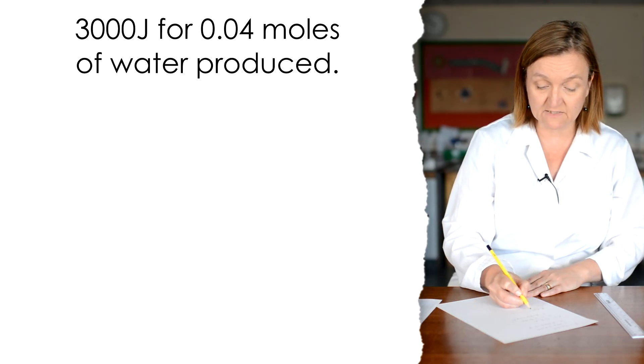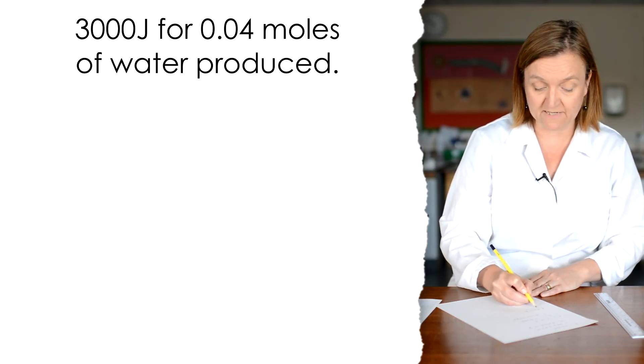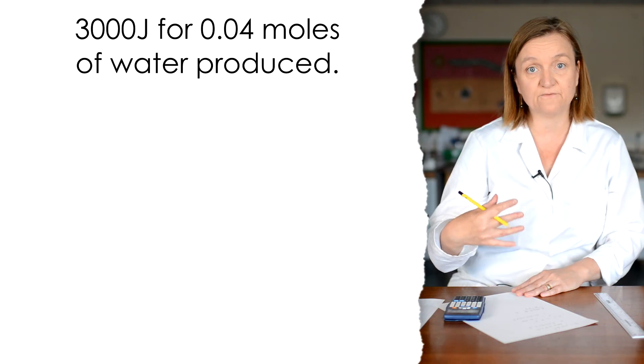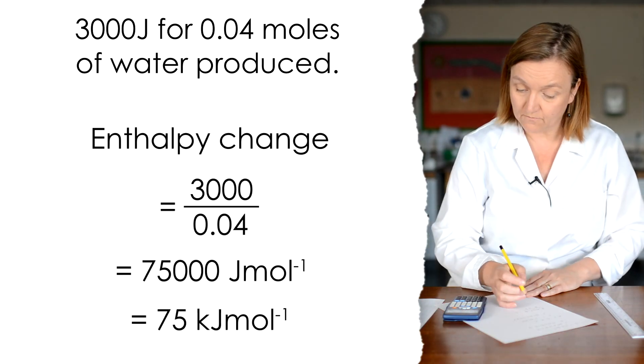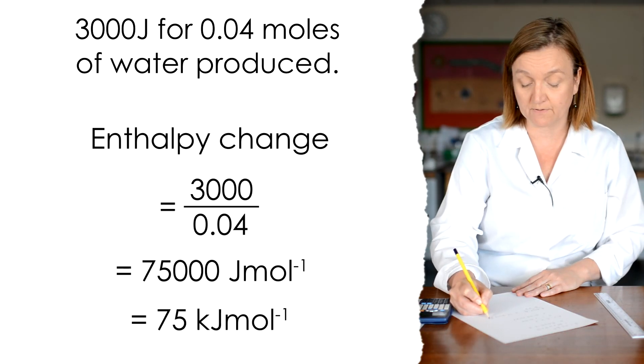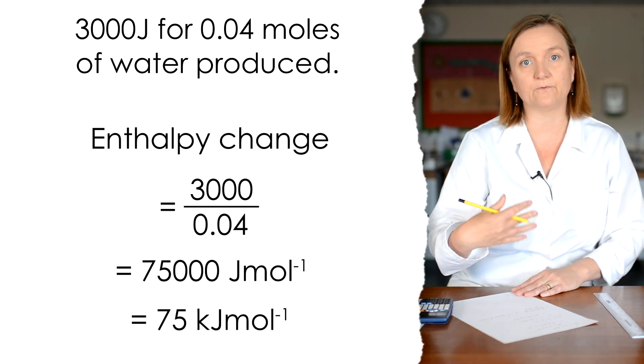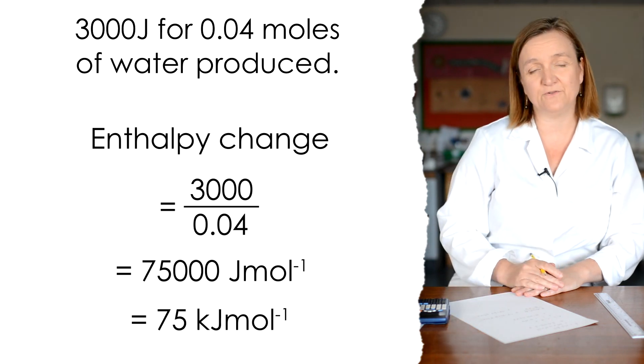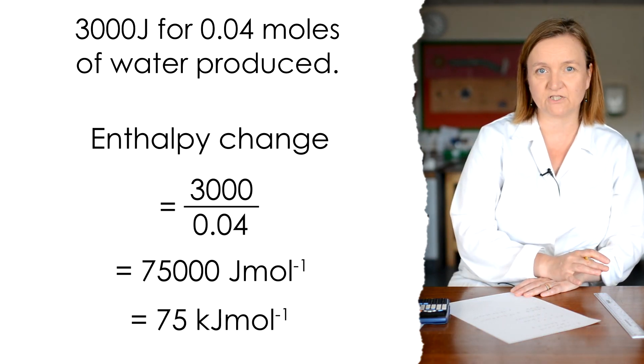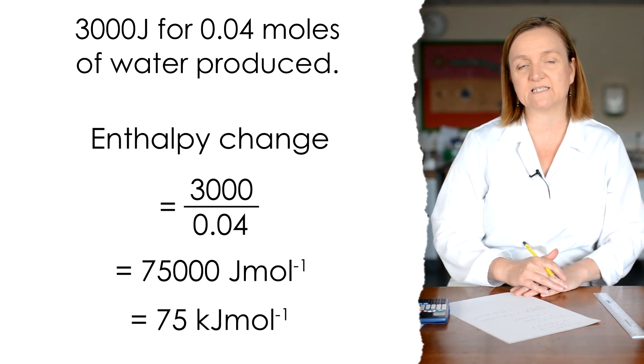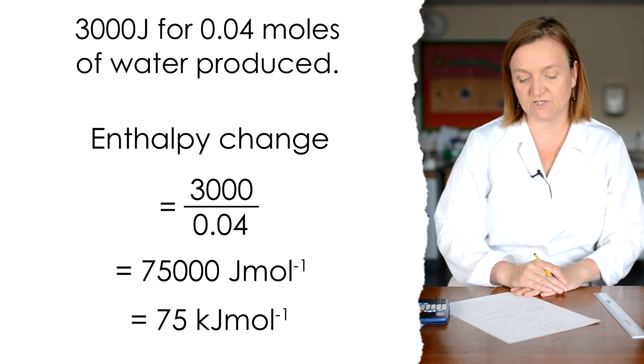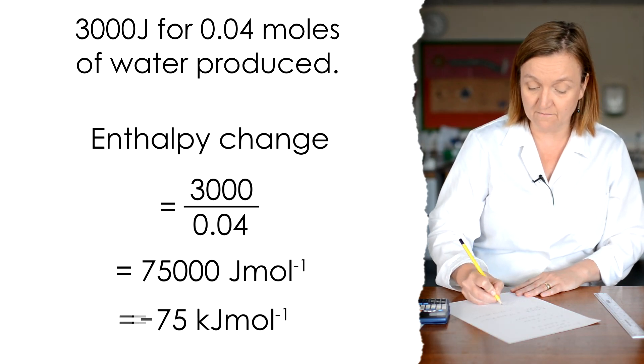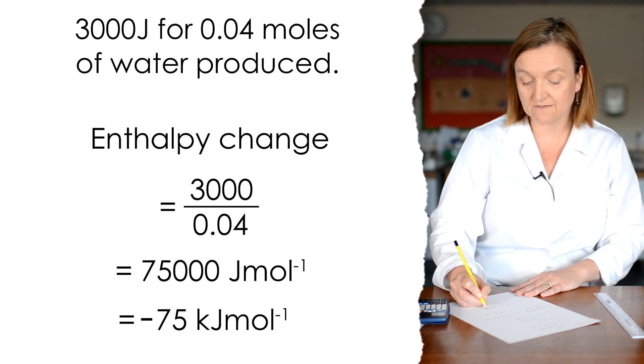So if I take my energy released and divide it by my number of moles, 0.04, that will give me the energy released for one mole of water, which is 75,000 joules per mole. But of course, we always convert to kilojoules. So that's 75 kilojoules per mole. And the final thing we have to remember is that this was an exothermic change. Temperature went up. And so when we express the enthalpy change of neutralisation, it must be expressed as a negative. So that gives me a final answer of minus 75 kilojoules per mole.